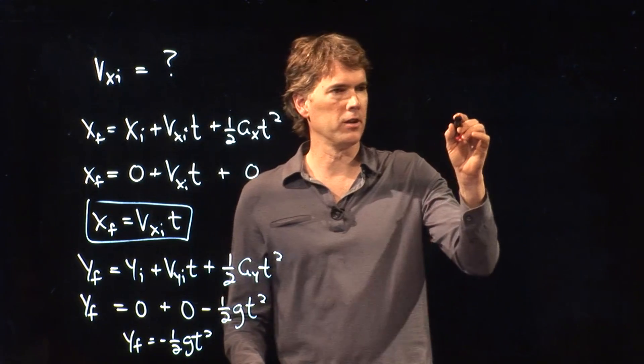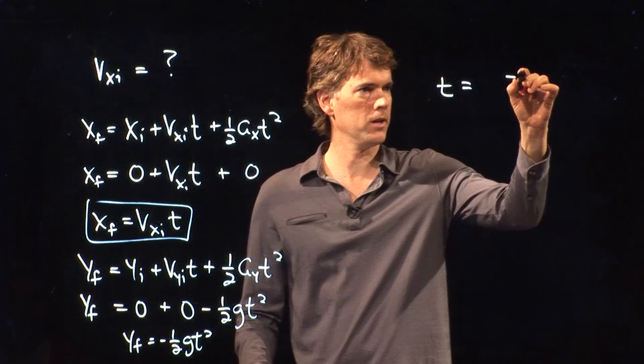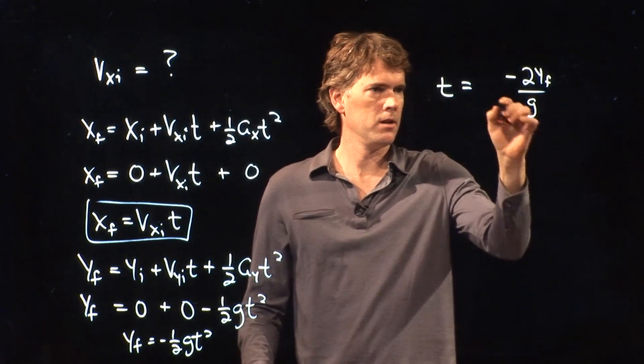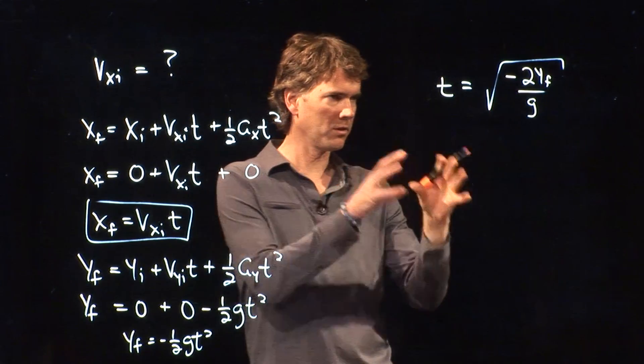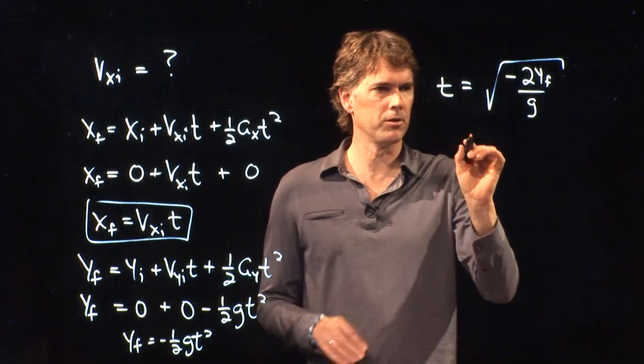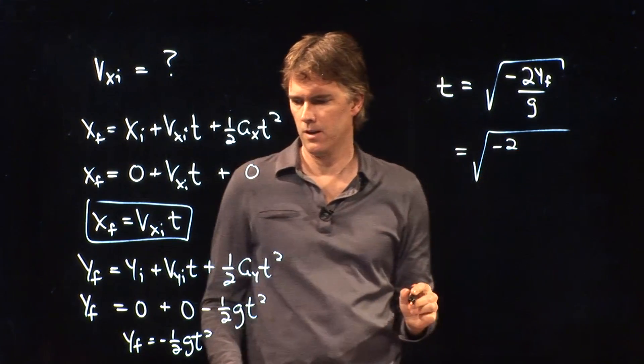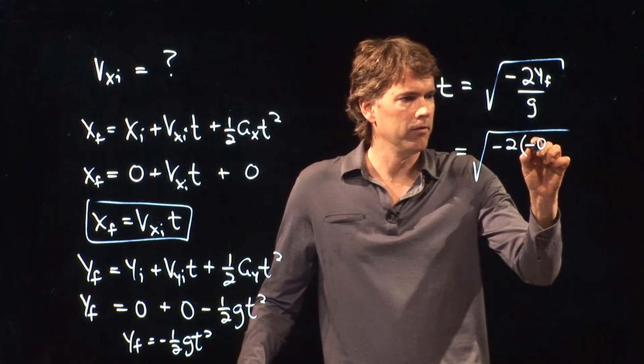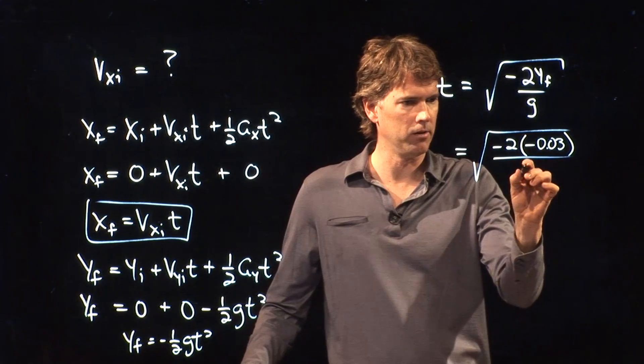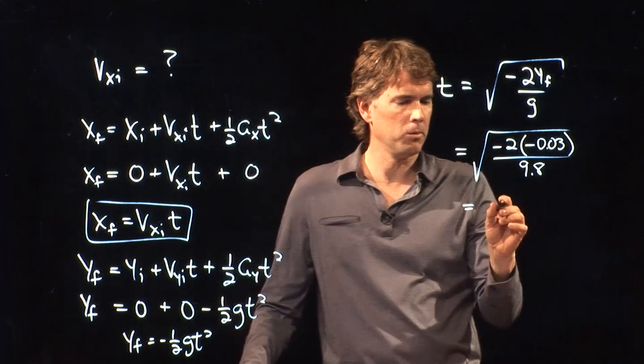Let's see if we can solve this thing for t. We have to multiply across by 2. It's actually a negative 2. So we have negative 2 times yf over g. And we're going to take the square root of that. And you're a little concerned at this point because there's a negative sign in there. But we remember that yf is also a negative number. So this becomes negative 2 times negative 0.03 meters. We're all in SI units. And we're going to divide that whole thing by 9.8. So plug that into your calculator and tell me what you get.